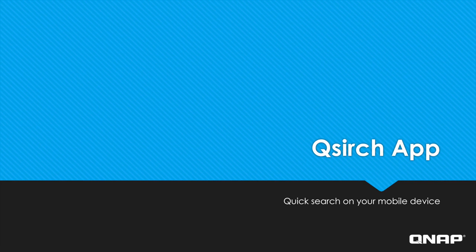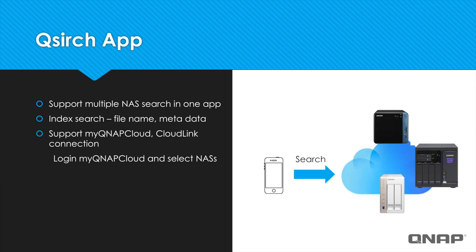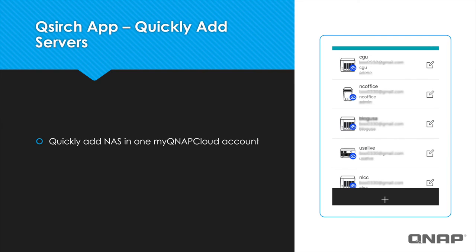We provide a powerful search engine called QSearch to help you quickly and easily locate your files. So even if you forget where you stored a file, finding what you need can be done in a matter of seconds. Now, you can utilize this feature on your mobile device with our QSearch mobile app. The QSearch app enables you to search the files of your NAS right on your phone. Now you can even search the files of multiple NAS units on the app of your phone. You can search by file name or metadata. You can find all of the registered NASes that you can search on your MyQNAP cloud account.